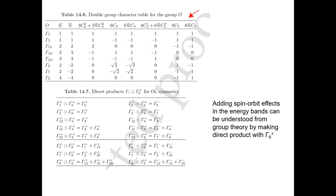Using orthogonality relations completes the character table for the double group of O — I'll show you the final result directly. Of course, we don't have to construct these every time because all double group character tables are already tabulated in textbooks, including appendices of our textbook and on the web.